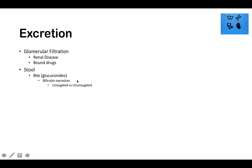The intestinal surface area is very large, so some bilirubin can be reabsorbed into the bloodstream after being deconjugated by bacteria — this is enterohepatic cycling. The same concept applies to drugs: drugs can be conjugated, excreted into bile, become deconjugated in the intestine, and be reabsorbed, cycling through the whole absorption-to-excretion process again.